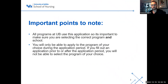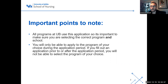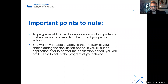Today we're going over the actual application. I took some screenshots and we're going to go point by point on how to fill out the UB application to the Graduate School of Nursing. All programs at UB use this application, so it's important to make sure you're selecting the correct program and the correct school. You can only apply to your program during its open application period, so filling out an application outside that window will make it null and void.